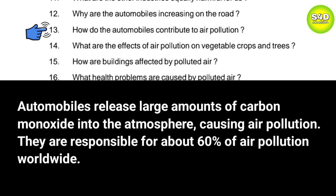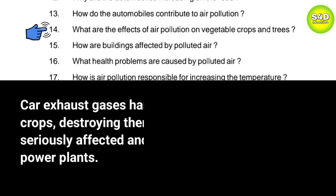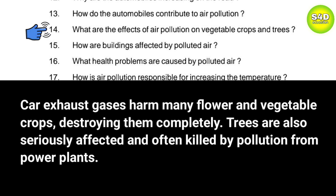Question 14: What are the effects of air pollution on vegetable crops and trees? Answer: Car exhaust gases harm many flower and vegetable crops, destroying them completely. Trees are also seriously affected and often killed by pollution from power plants.